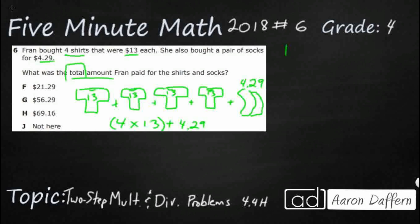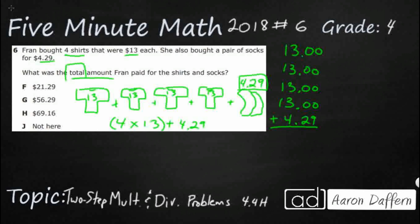Here's the tricky part with the 13s, and I'm pretty sure this is why this problem is written the way it is. Adding four 13s is obviously not that difficult, but what do we do with the $4.29? We need to line up the decimals, but there are no decimals in 13. So here's what we need to know: when there is not a decimal, it always goes after the ones place, to the right of the ones place. So 13 becomes $13.00.